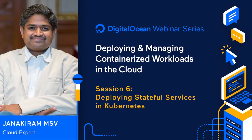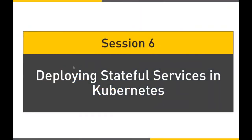This series has been primarily focused on taking source code, containerizing it using Docker, and then deploying it on Kubernetes. If you've been following along, you'd have noticed we covered everything including running web-scale applications. In the last session, we covered how to run microservices in Kubernetes, where we took a Node.js app and scaled it to run as 10 pods, achieving maximum scale.